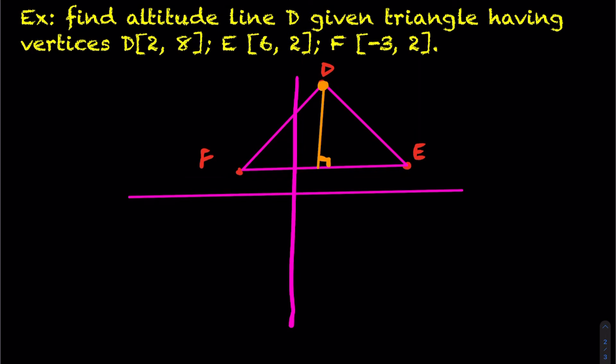Well, let's try to do that. If I need the equation of a line, the equation of a line is y equals mx plus b. So that means I'm going to need to calculate my slope and my y-intercept. If I can calculate the slope of line segment FE, I know the negative reciprocal will be the slope of my altitude line D.